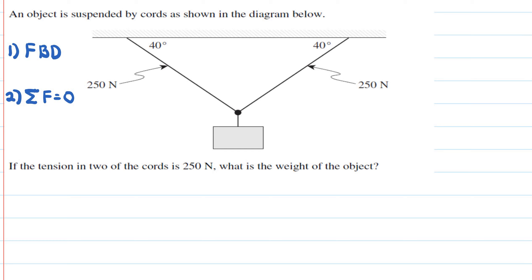In this next problem we have an object that is suspended by cords as shown in the diagram. When an object is suspended it generally means that the object is not moving. The tension in the two cords is 250 newtons and we want to find the weight of the object.